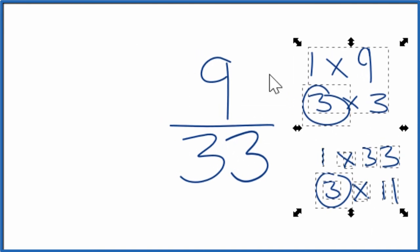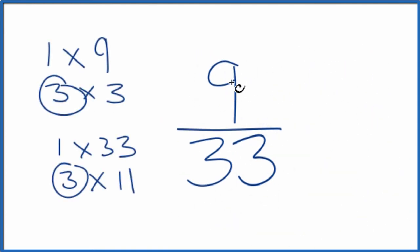Let's move these over here. So 9 divided by 3, that's 3. And then 33 divided by 3, that's 11. And we've simplified 9 over 33 down to 3 over 11.